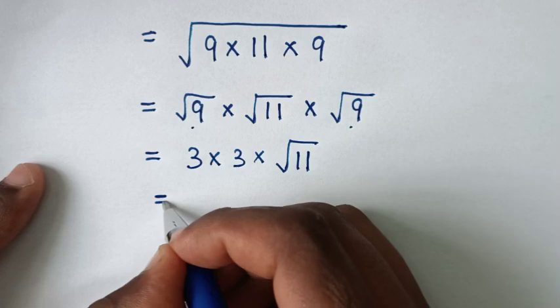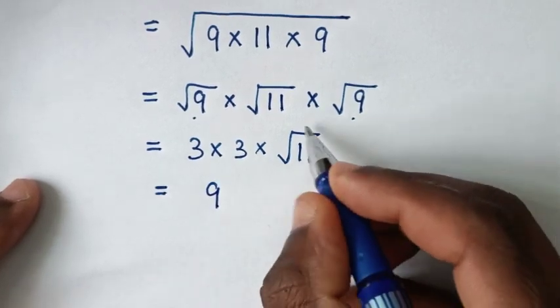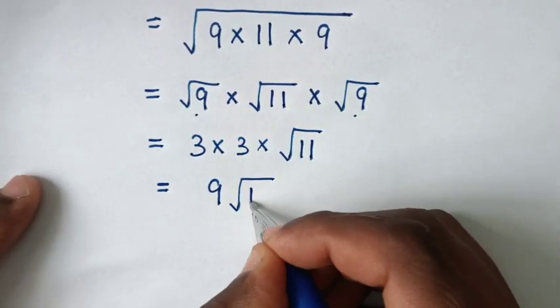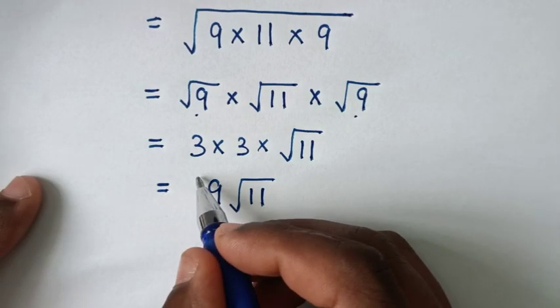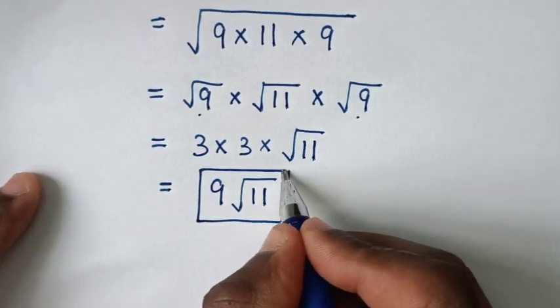Then it will be equal to 3, then it is 9 times this square root of 11. So 9 square root of 11 is our final answer.